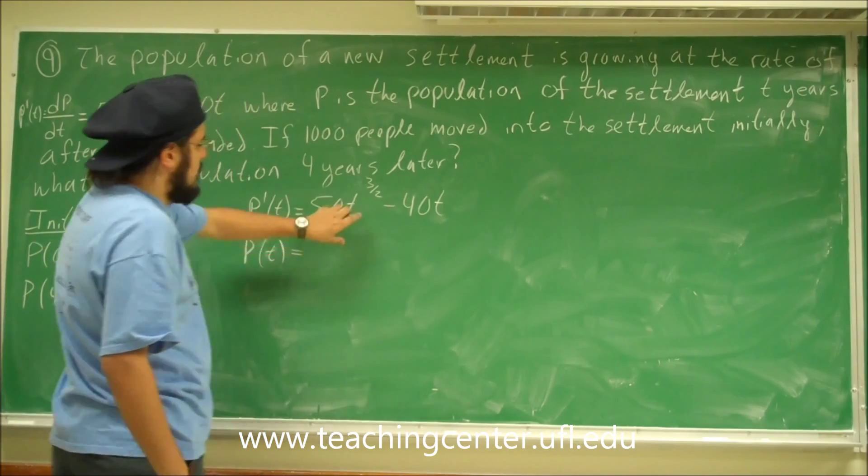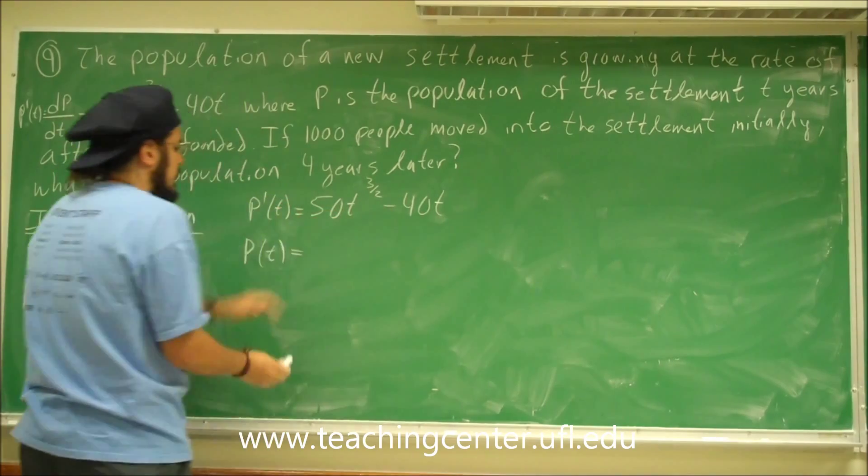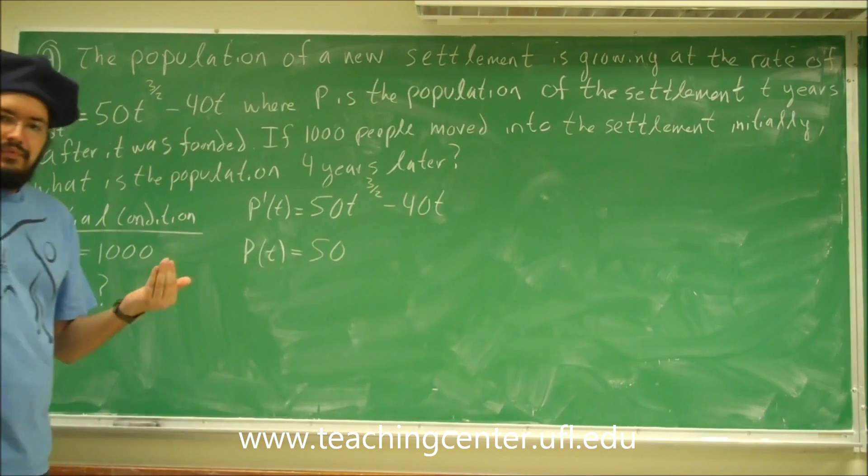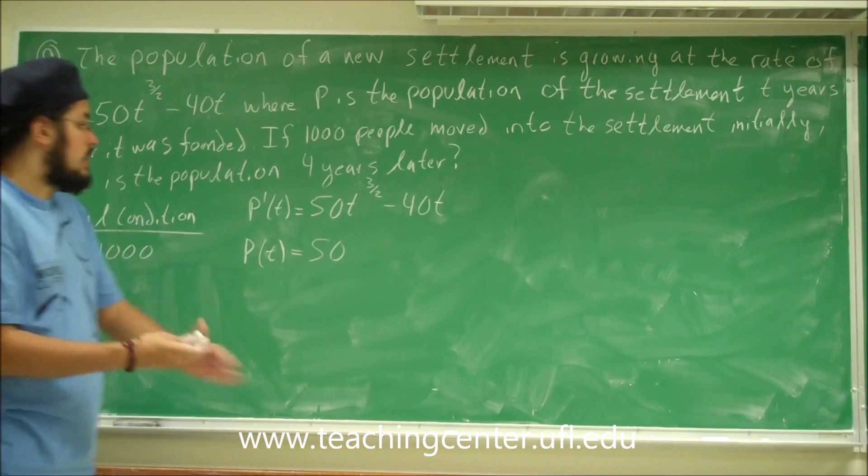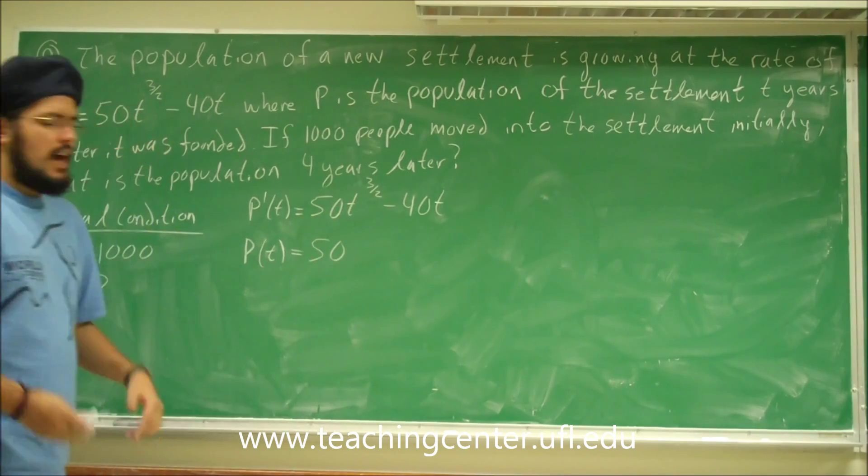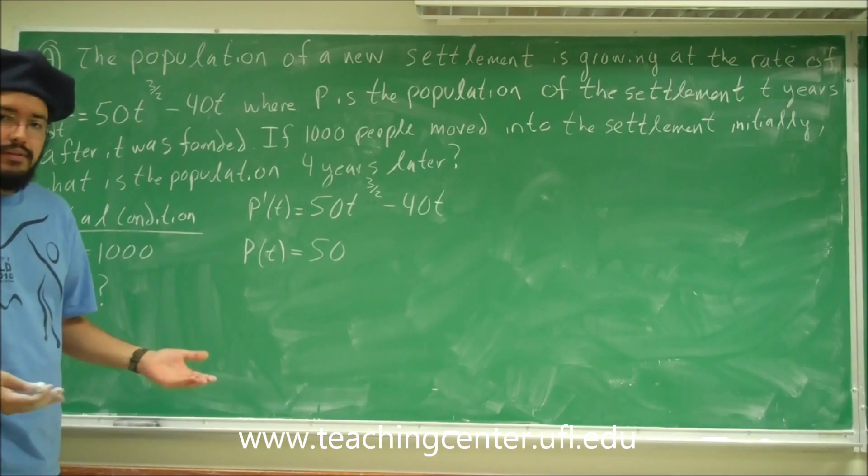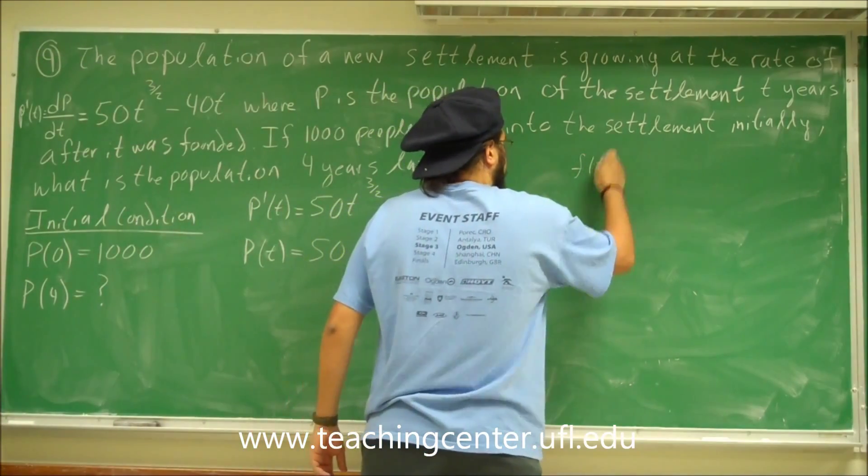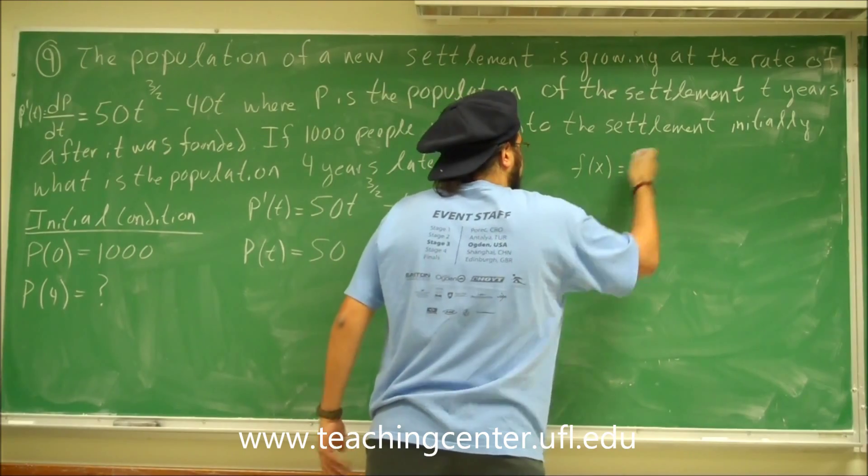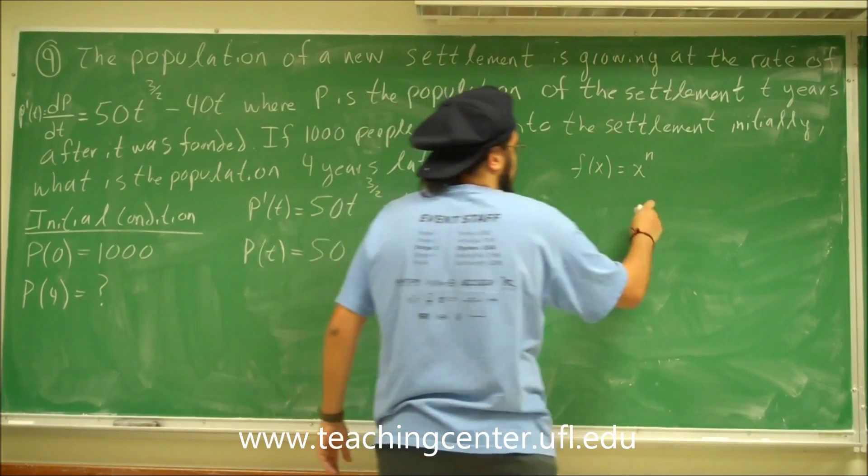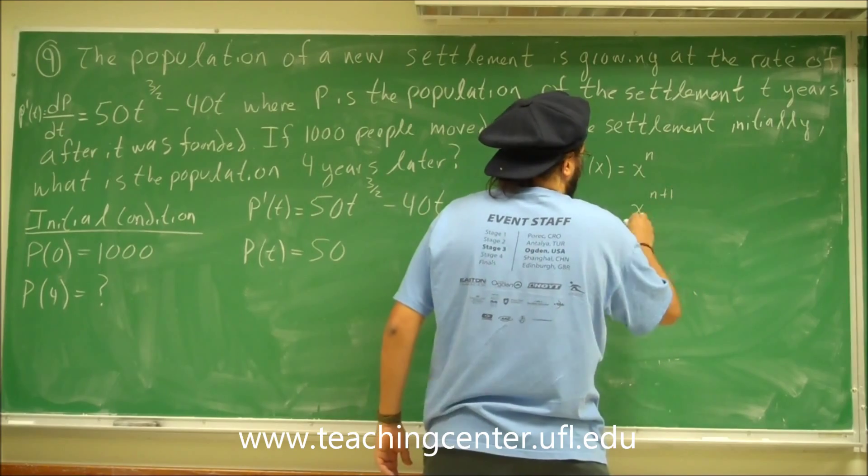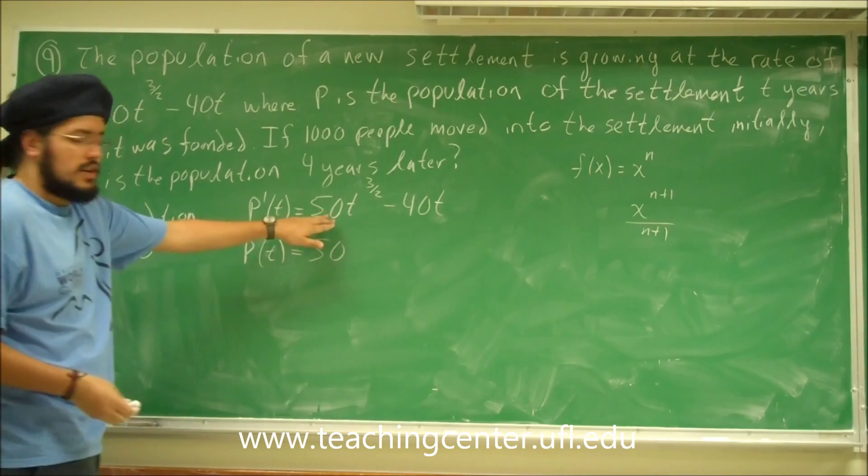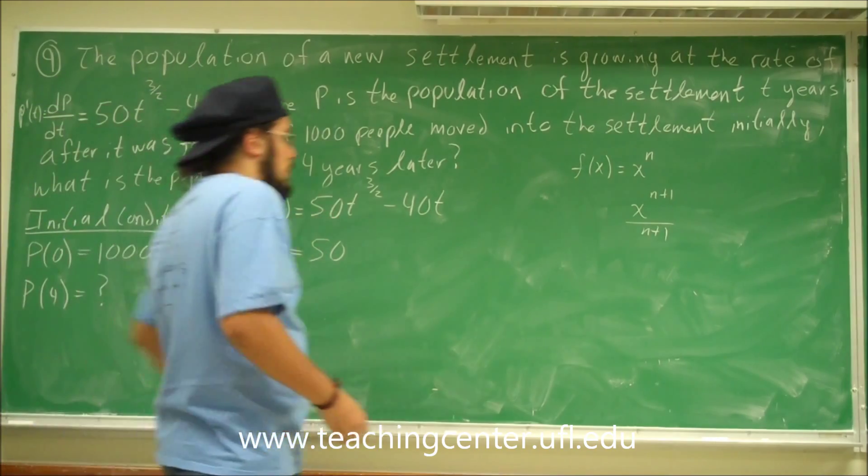So let's take the antiderivative. Let's just focus on this one. 50 is a constant, so I'll just bring 50 outside. Now, we want to find a function that if we take the derivative of that function, we'll get t to the 3 halves. However, we know the power rule for antiderivatives. The power rule for antiderivatives: if you have a function x to the n, then the antiderivative is going to be x to the n plus 1 divided by n plus 1. So that's what we're going to do here.